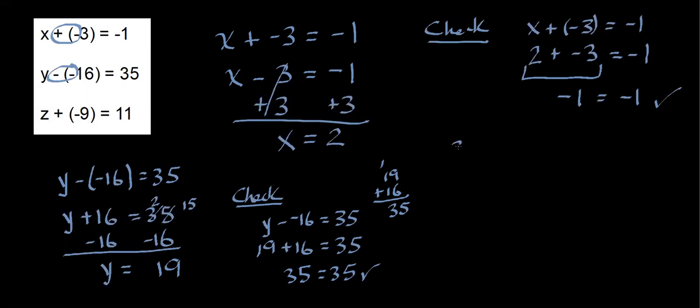One last example problem. I have z plus negative 9 equals 11. Adding a negative is the same as subtracting a positive. So I'm going to write this as z minus 9 equals 11. I'm going to add 9 to both sides. This cancels out. 11 plus 9 is 20. Do my check.